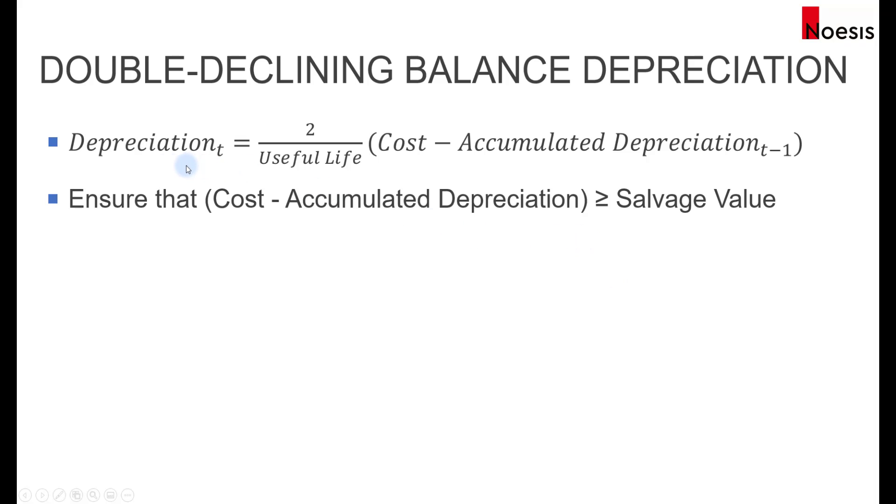The formula to compute the depreciation expense during year t is 2 for double the speed, that's 200%, that's the acceleration factor, divided by the useful life of the asset multiplied by the cost minus the accumulated depreciation as of the previous year.